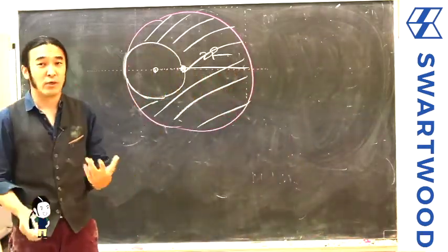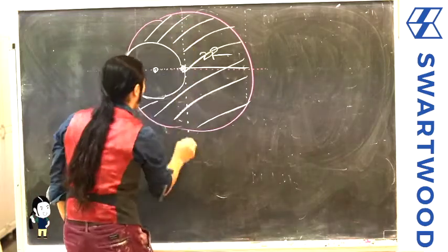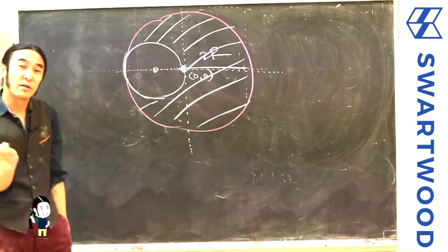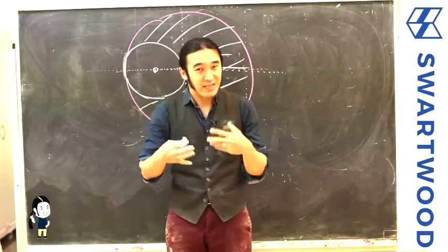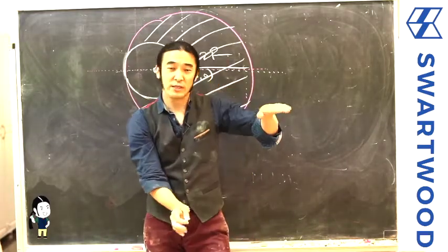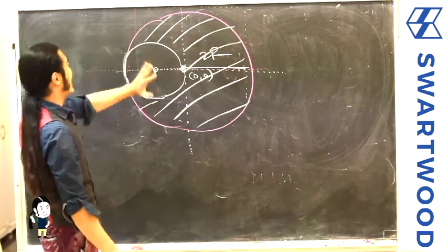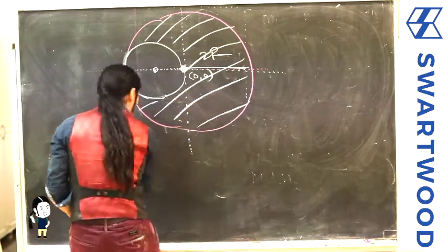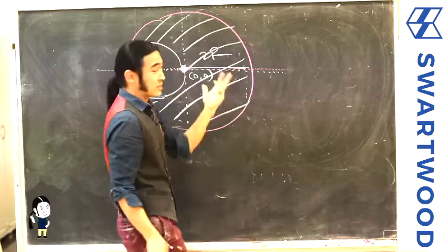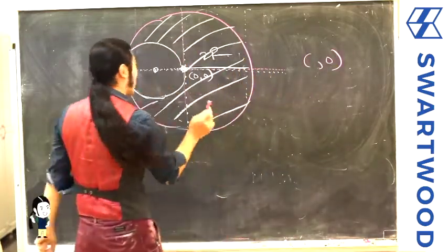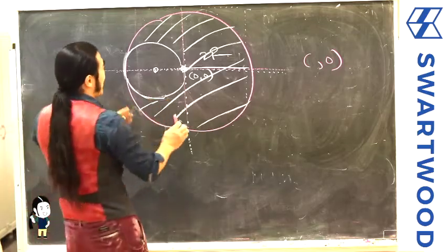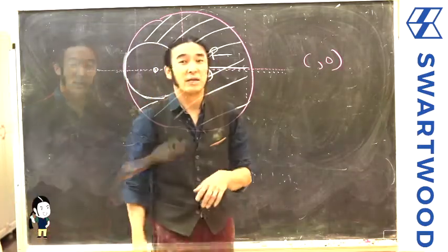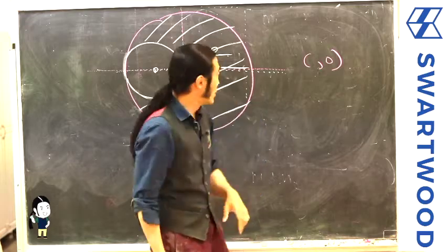Set up the coordinate system any way you want. I'm going to set it up so that the origin — zero, zero — is at the center of the large circle. I want to compute the center of mass. Vertically, that's straightforward: the top looks just like the bottom, so the center of mass has a y-coordinate of zero. Horizontally, that's a little bit trickier, because it's not symmetric — the center of mass is going to lean to the right, but I don't know how far.